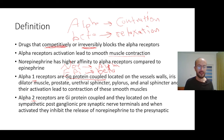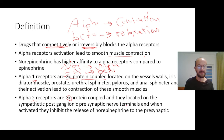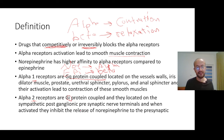Alpha-2 receptors are Gi (G inhibitory) protein-coupled receptors. They are located on the sympathetic postganglionic presynaptic nerve terminals. When activated, they inhibit the release of norepinephrine into the synaptic space, acting like a negative feedback loop — when noradrenaline increases, these receptors activate to inhibit further norepinephrine release.